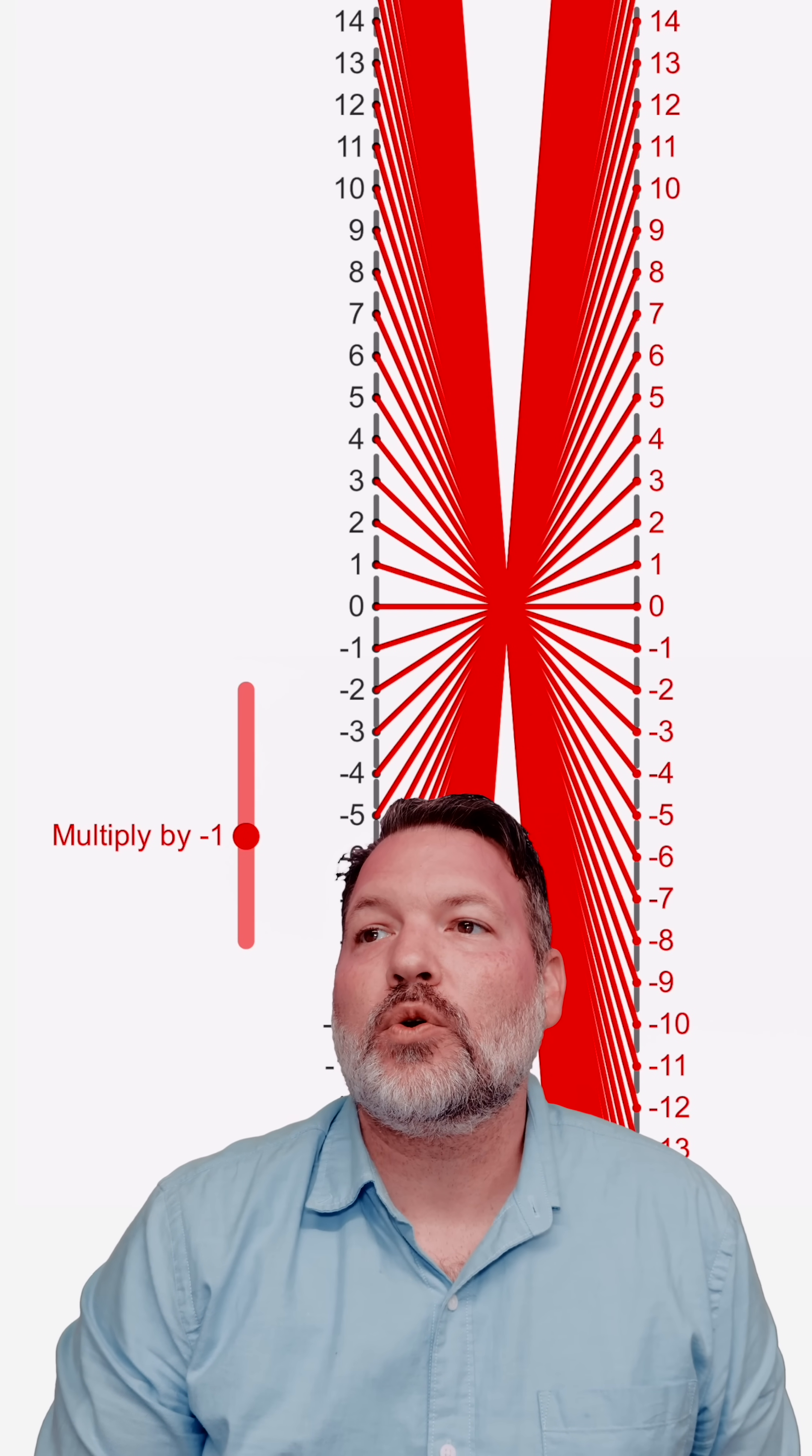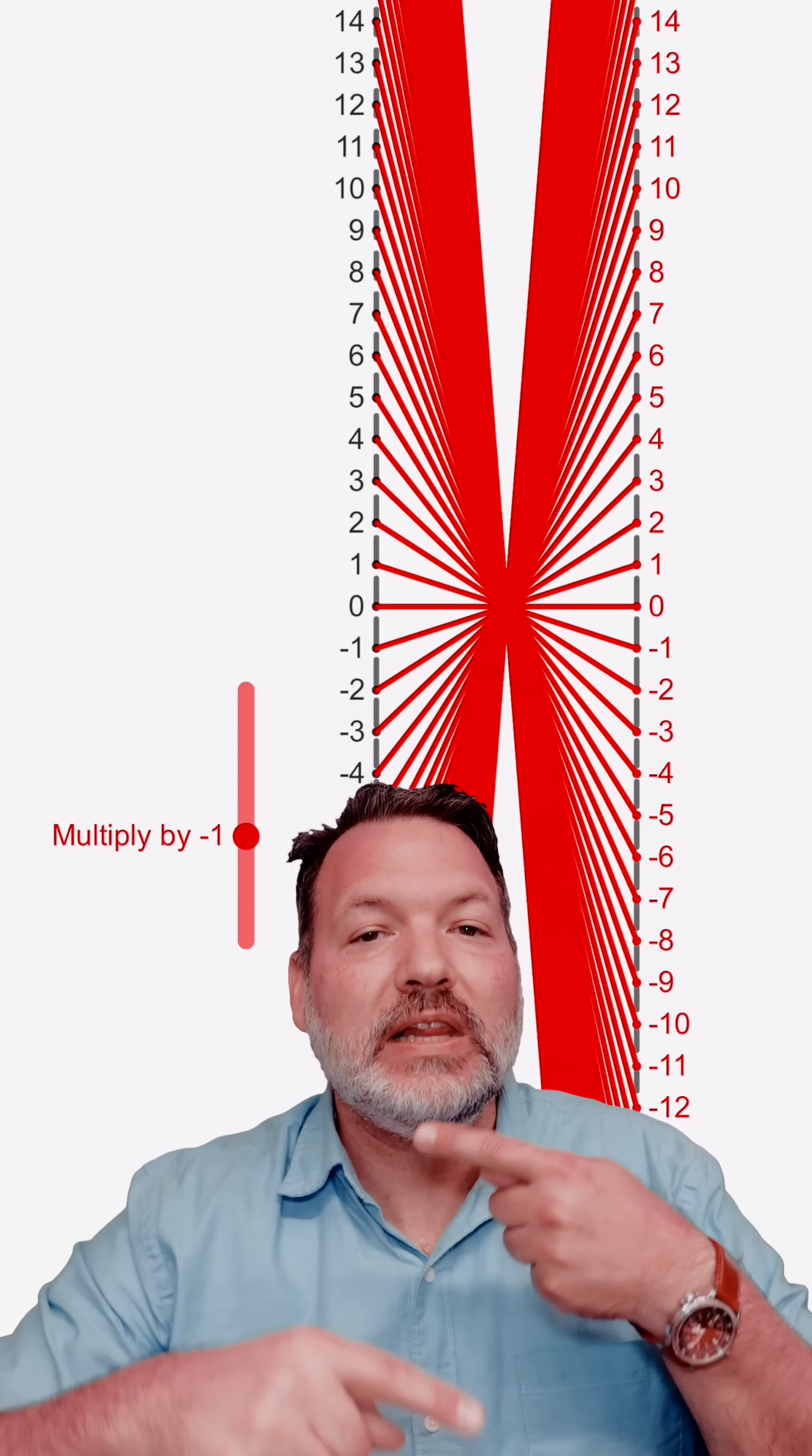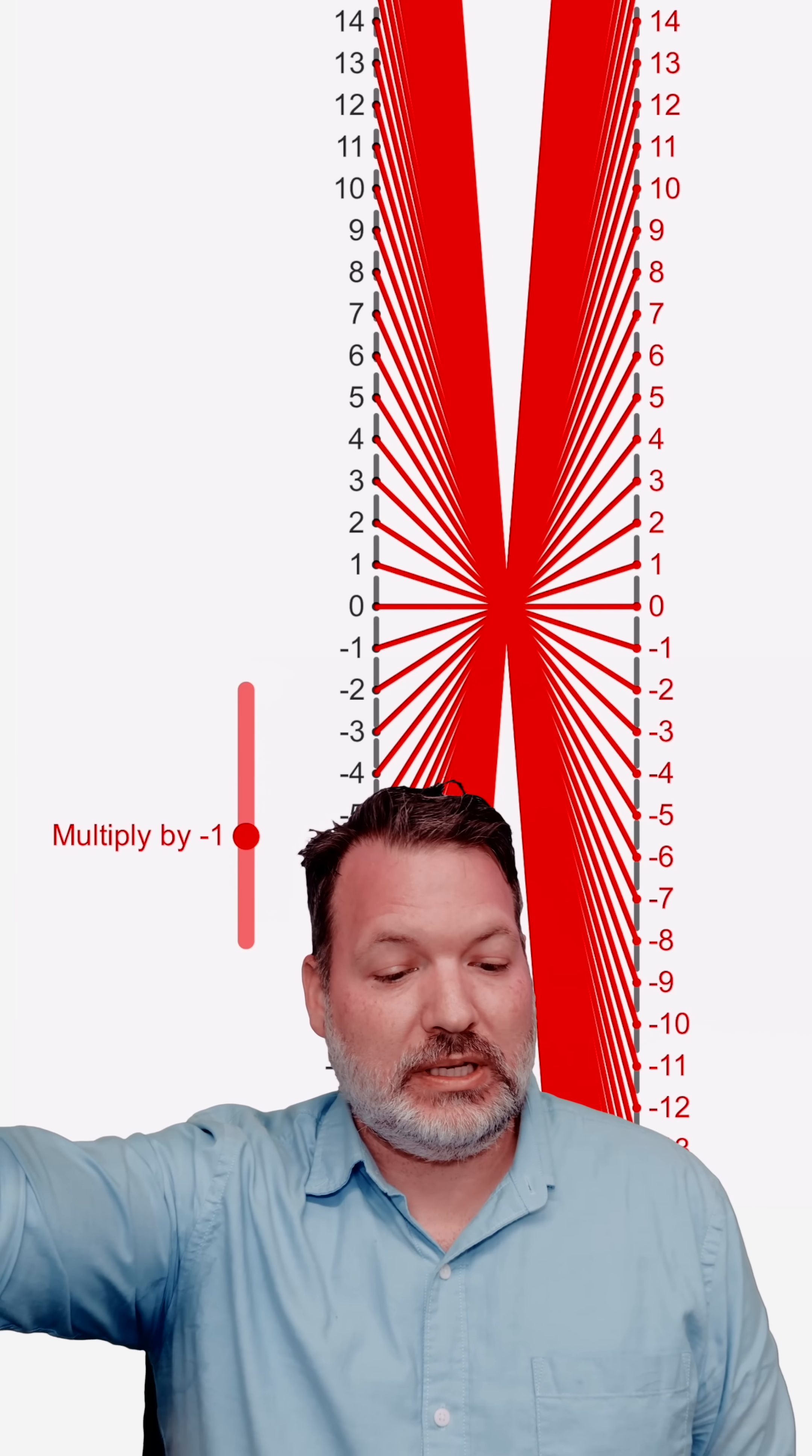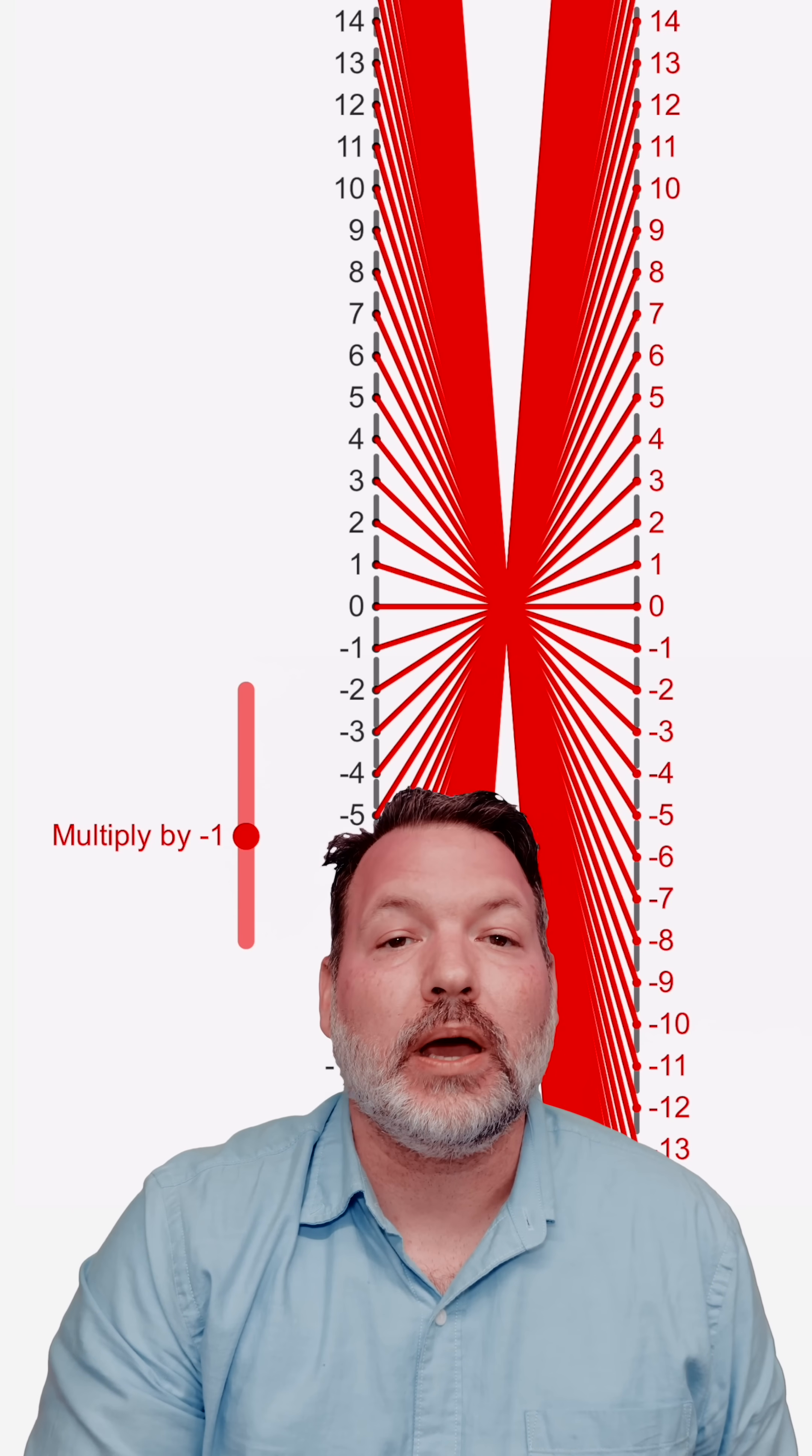If you take some negative quantity and you scale it by a negative factor, you're not just stretching or compressing your number line, you are now flipping the entire number line around. This is why positive numbers times negative numbers become negative, and it's why negative numbers times negative numbers become positive.